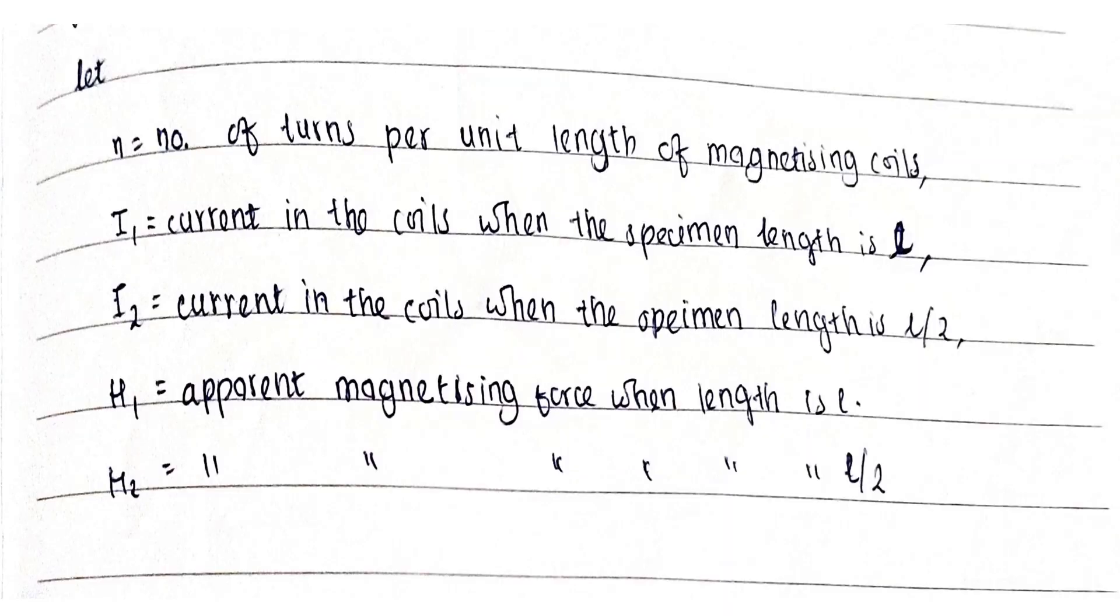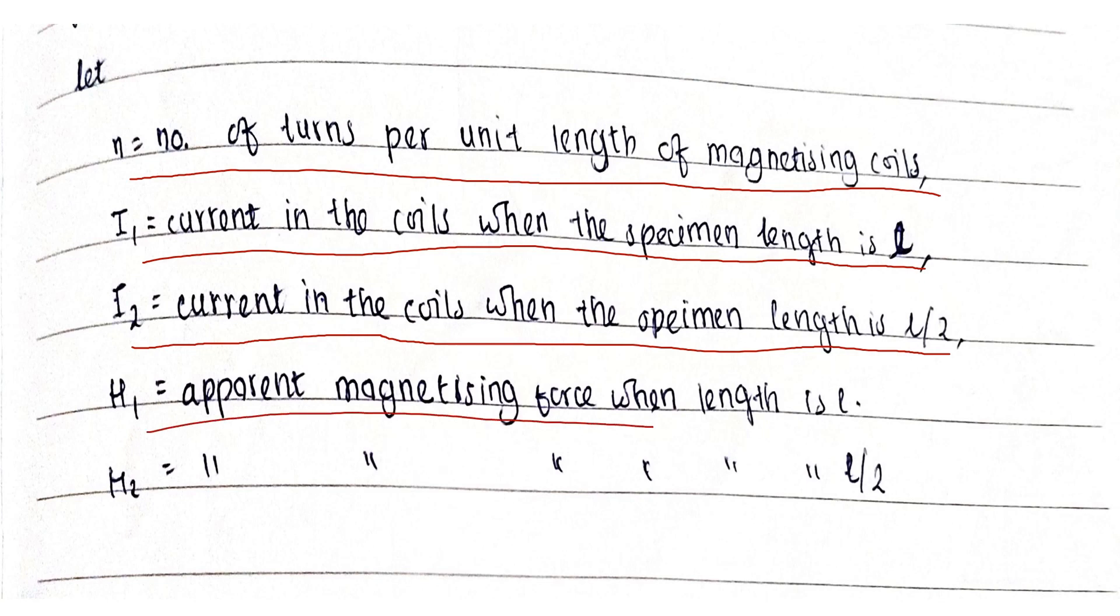Let us consider: N = number of turns per unit length of the magnetizing coil, I₁ = current in the coils when the specimen length is L, I₂ = current in the coils when the specimen length is L/2, H₁ = apparent magnetizing force when the length is L.